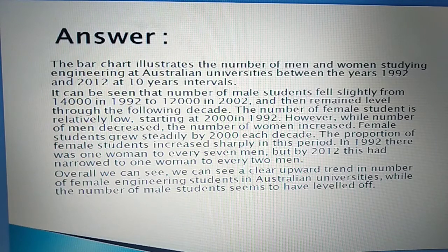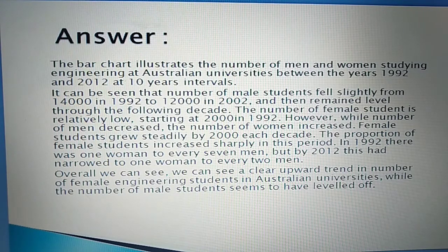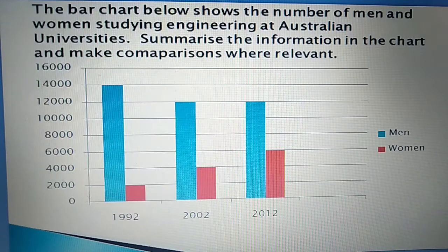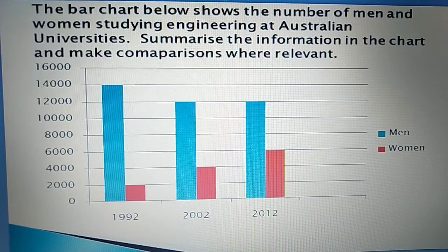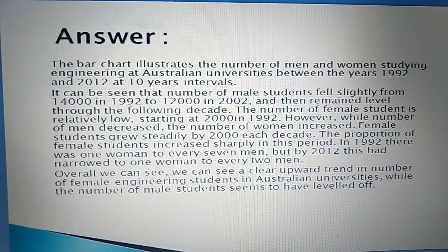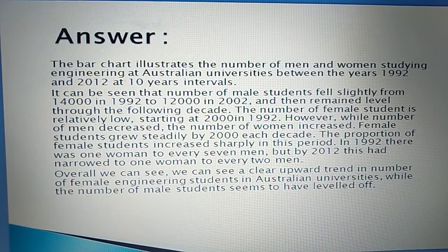Now let's write the paragraph. Introduction: 'The bar chart illustrates the number of men and women studying engineering at Australian universities between the year 1992 and 2012 at 10-year intervals.' The question says the chart shows the number of men and women studying engineering — same line — but we added that it covers from 1992 to 2012 at 10-year intervals, which wasn't explicitly stated in the question.